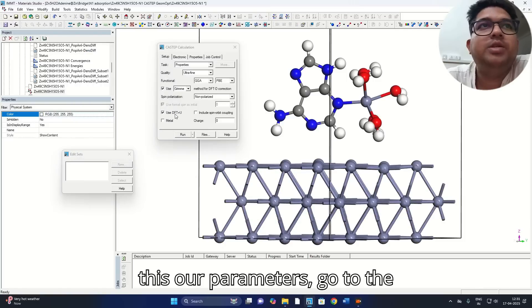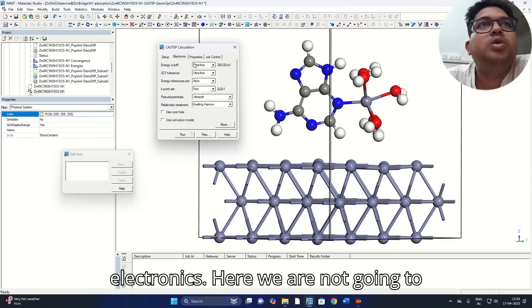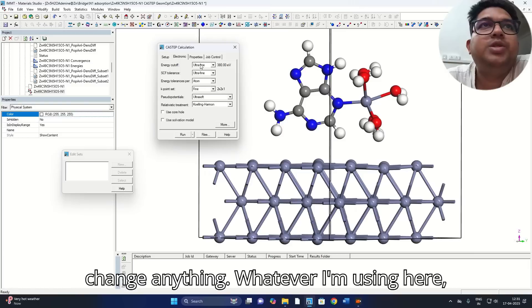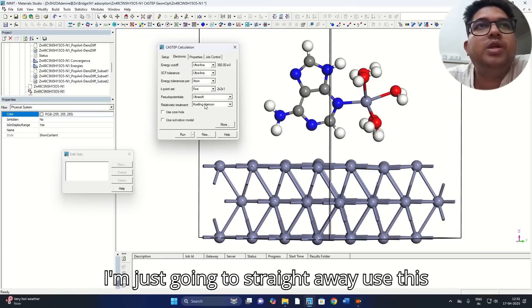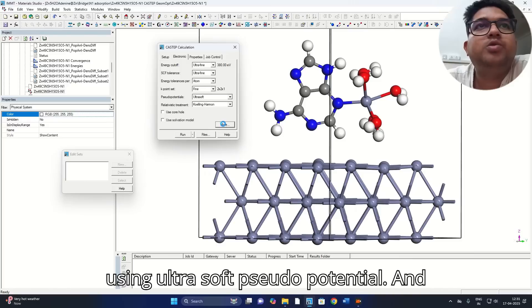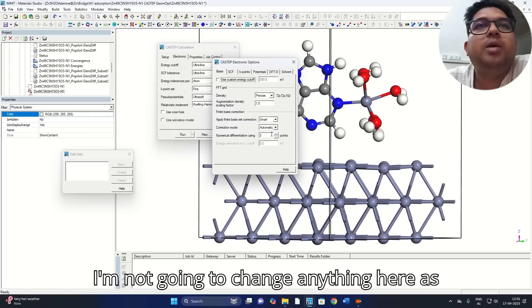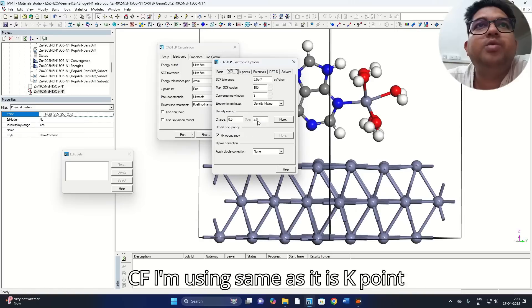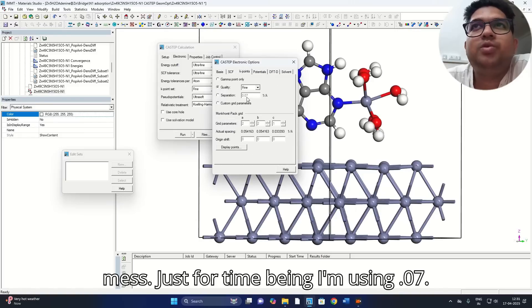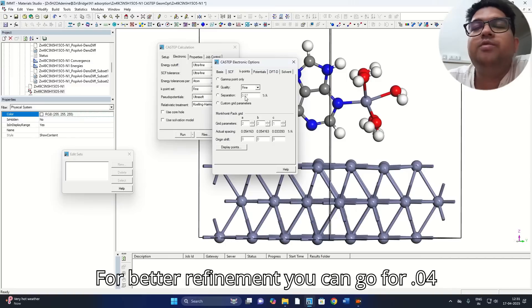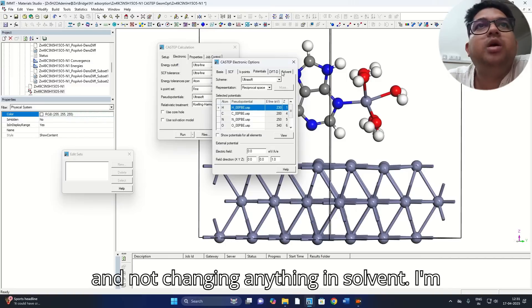Once you have set these parameters, go to the electronics here. I'm not going to change anything. I'm just going to use this using ultrasoft pseudopotential. I'm not going to change anything here. SCF I'm using same as is. K-mesh I'm using 0.07 for better refinement. You can go for 0.04.